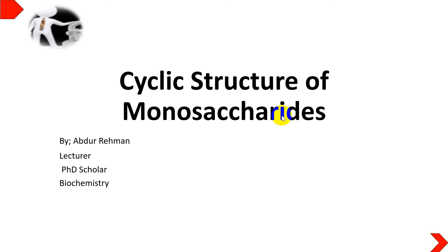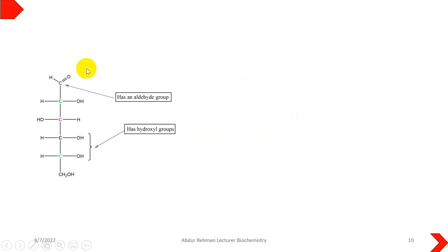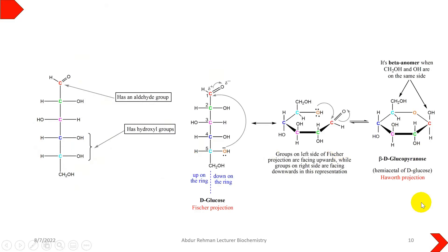Hello viewers, today's tutorial is about the cyclic structure of carbohydrates. Monosaccharides can be found in linear form, known as Fischer projection, or cyclic form, which is known as Haworth projection.